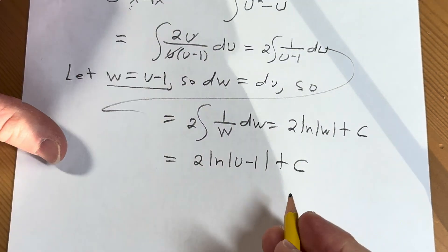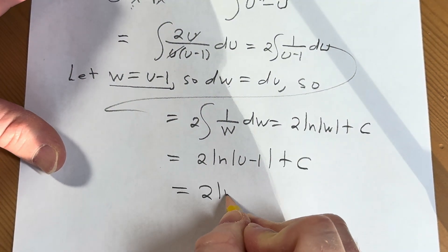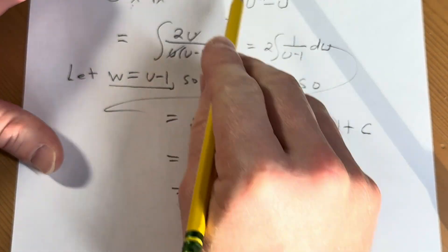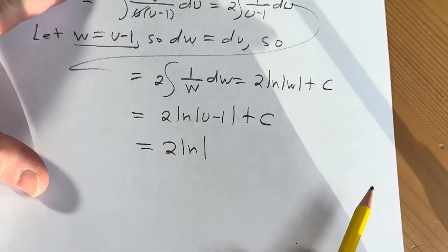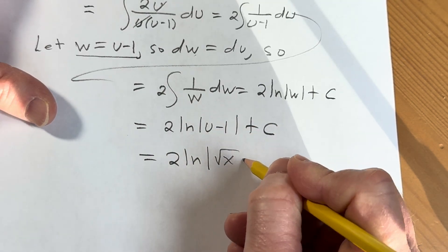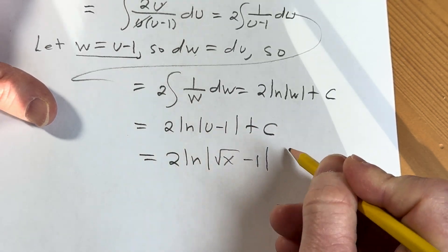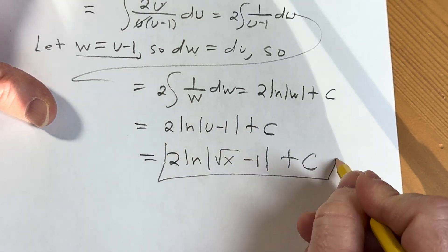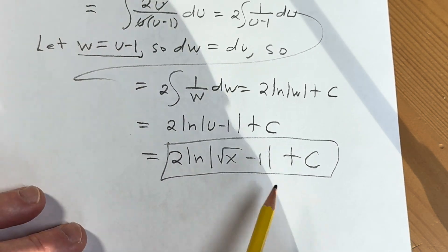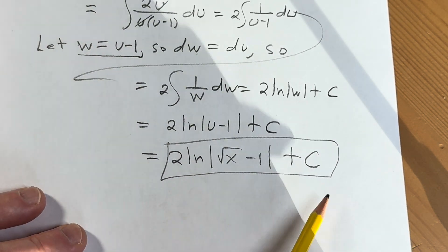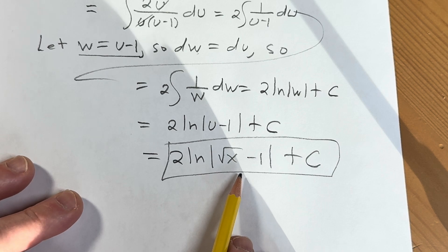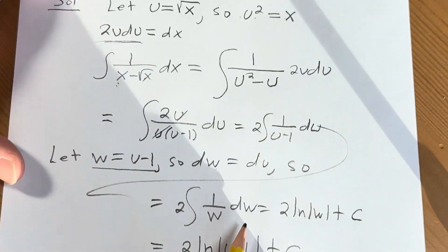And then at the very end, this is equal to 2 natural log — so u was the square root of x, right? That's from before. So this will be equal to the square root of x minus 1, plus C. So the final answer is 2 times the natural log of the absolute value of the square root of x minus 1, plus C. So that's the answer. Hopefully you learned some mathematics.